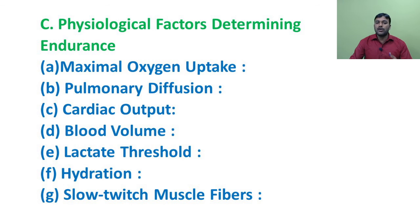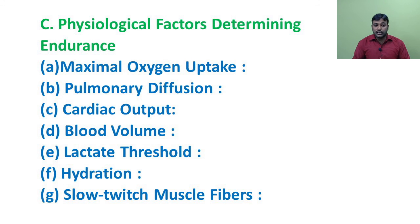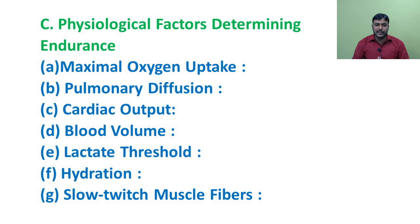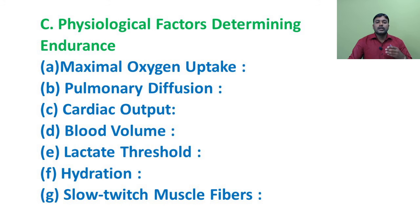The first factor is maximal oxygen uptake, VO2 max. Maximum oxygen uptake refers to the highest rate at which oxygen can be taken up and consumed by the body during intense exercise. The body gets energy from the continuous production of ATP. These reactions involve mitochondrial respiration, which depends on continuous oxygen availability. Better oxygen intake can be a major factor determining the endurance of a person.